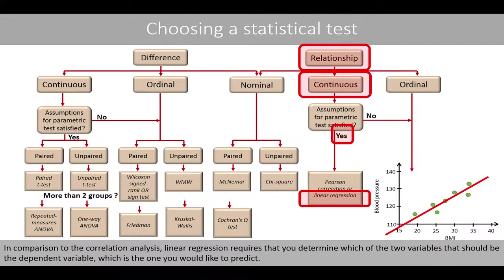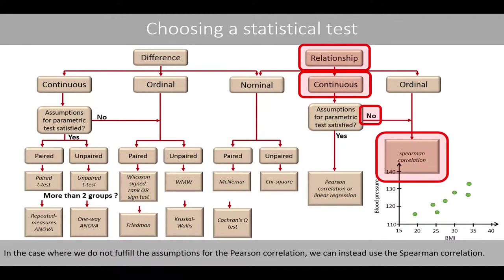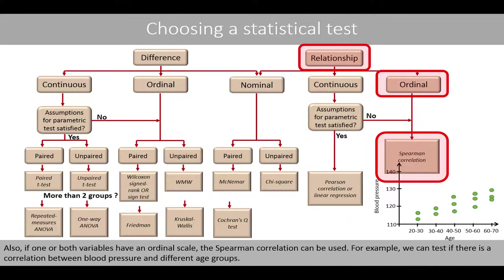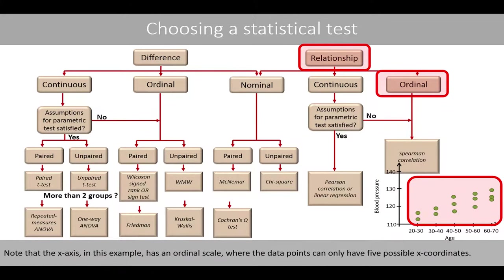In comparison to correlation analysis, linear regression requires that you determine which of the two variables should be the dependent variable — the one you would like to predict. In the case where we do not fulfill the assumptions for Pearson correlation, we can instead use the Spearman correlation. Also, if one or both variables have an ordinal scale, the Spearman correlation can be used. For example, we can test if there is a correlation between blood pressure and different age groups, where the x-axis has an ordinal scale with only five possible x-coordinates.